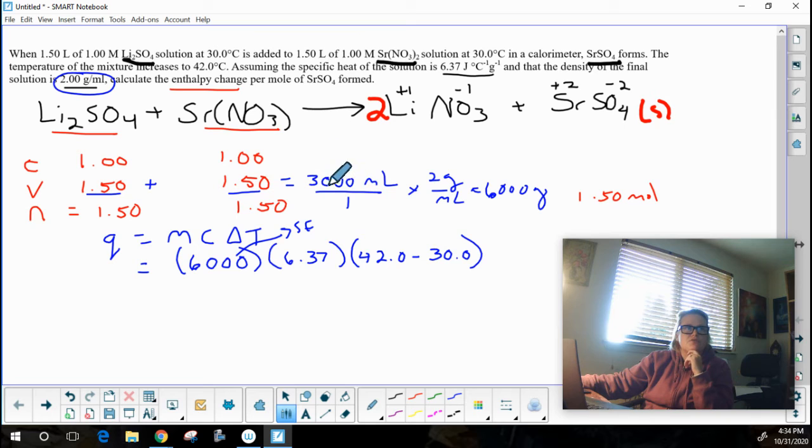And even though I add them together, it doesn't look like there's 3 sig figs here. Remember, this is technically 6.00 times 10 to the third. So we're rounding everything to 3 sig figs.